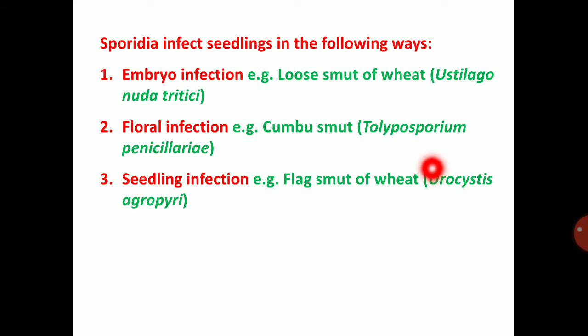Flag smut infects at the seedling stage but does not exhibit symptoms. Smut will infect the plant at the seedling stage itself, but symptoms are not exhibited. It systemically travels through the plant system and exhibits symptoms at the maturity stage — specifically at the grain-forming stage. So smut will exhibit symptoms at the grain-forming stage.